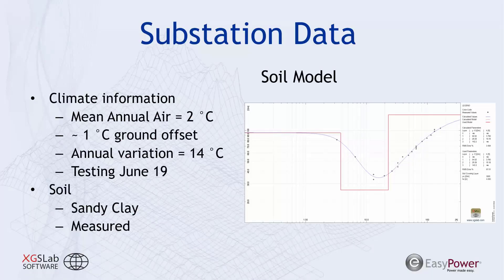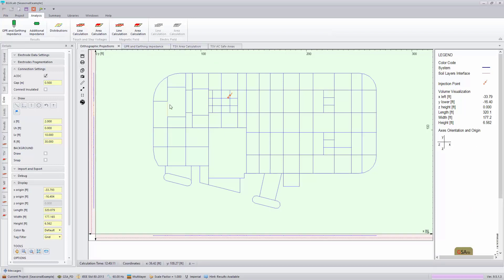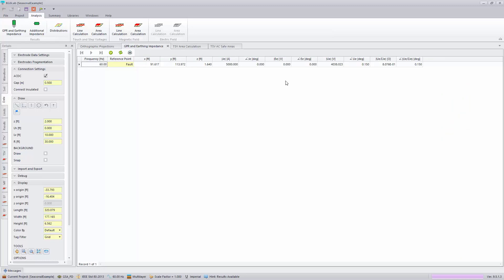Now let's look at a case study. For our example substation, the mean annual air temperature is 2 degrees Celsius — more northern regions, closer to an Alaskan region — with a 1-degree offset for ground temperature representing solar energy imparted on the earth, and an annual variation of 14 degrees Celsius. Testing was performed in summer, June 19th, and the soil is characterized as sandy clay. In the XGS Lab software, the modeled substation shows approximately 0.8 ohm impedance in summer, with a 5,000-amp fault current producing approximately 4,000 volts ground potential rise.